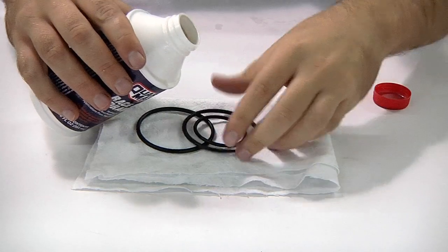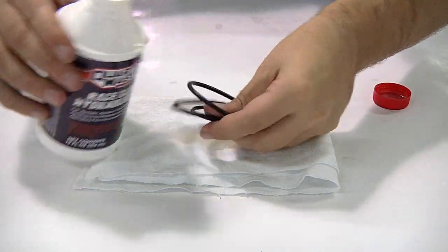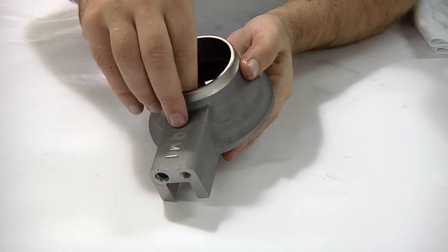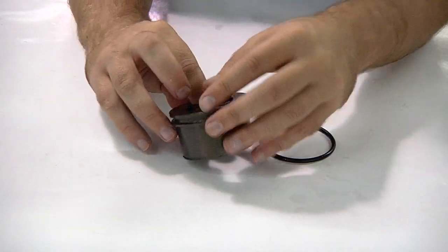Before putting the bearing back together, lubricate the new seals. Install the new seals in the bearing body, the piston, and on the AN fittings.